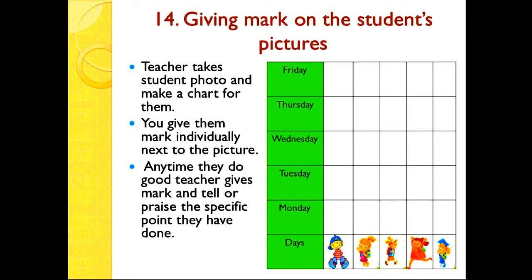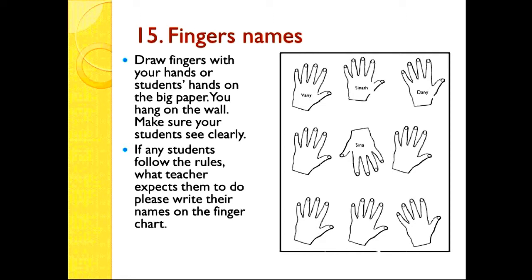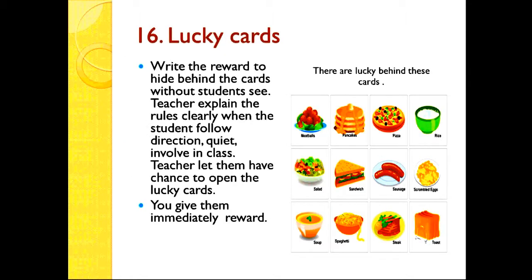Number fourteen: give marks on student pictures — similar to the name chart, but using a photo of each student with marks next to it. Number fifteen: finger names. Draw a picture of a hand on big paper and hang it on the wall. Make sure students can see it clearly. If a student follows the rules and meets your expectations, write their name on one of the fingers. For example, you can see names like Cena, Nari, and others written on fingers. Students whose names are not there have not yet acted well.